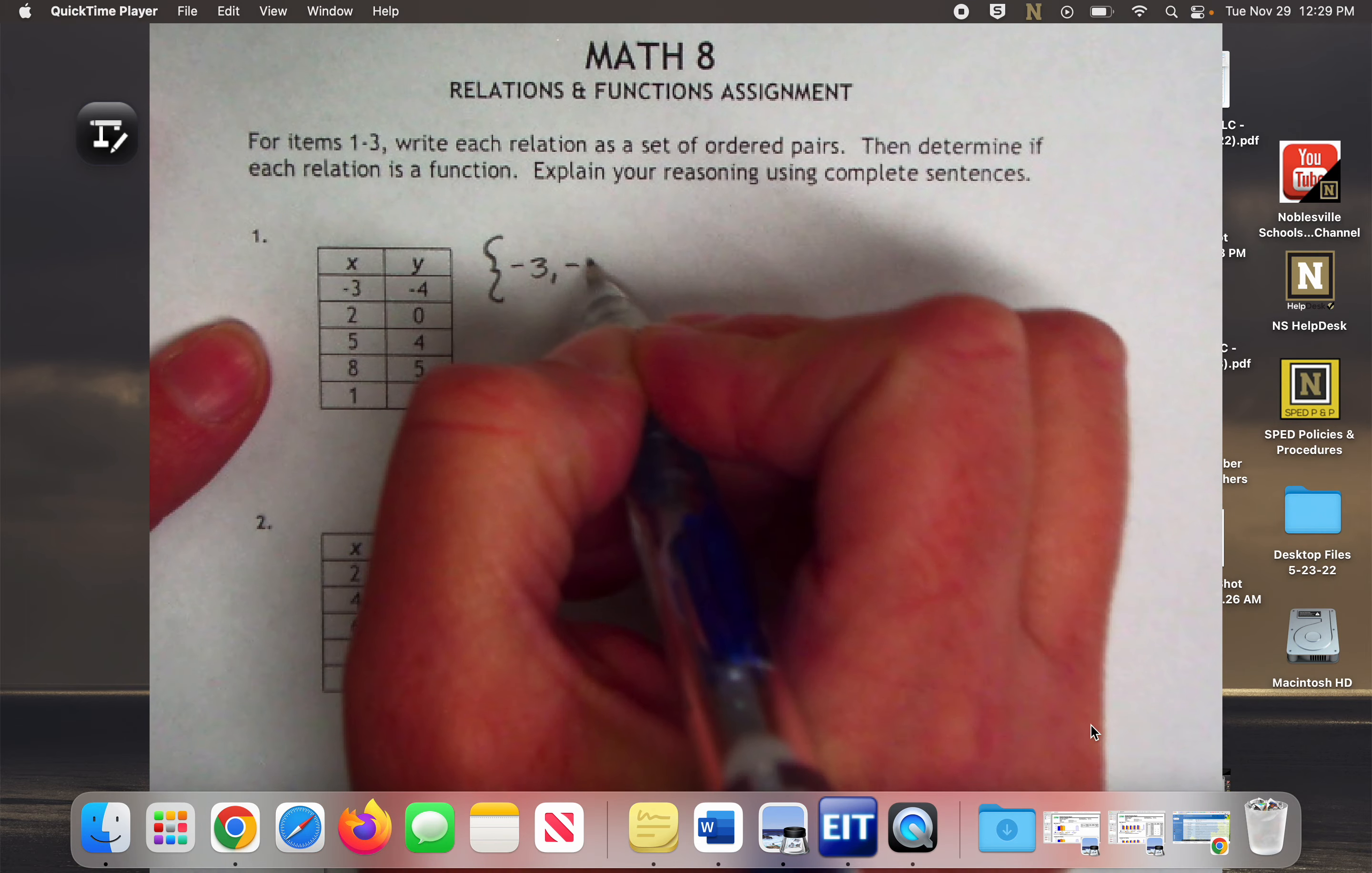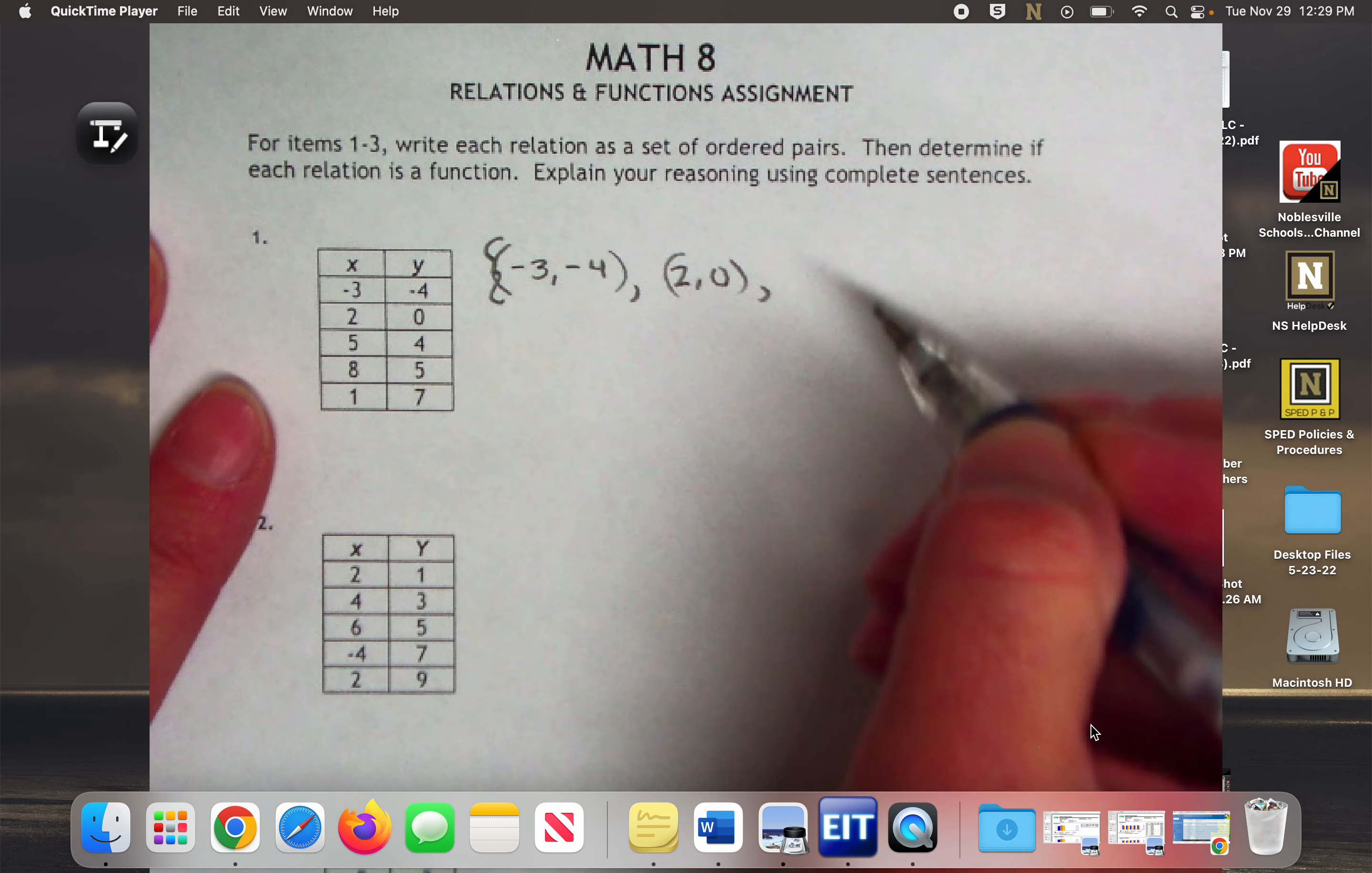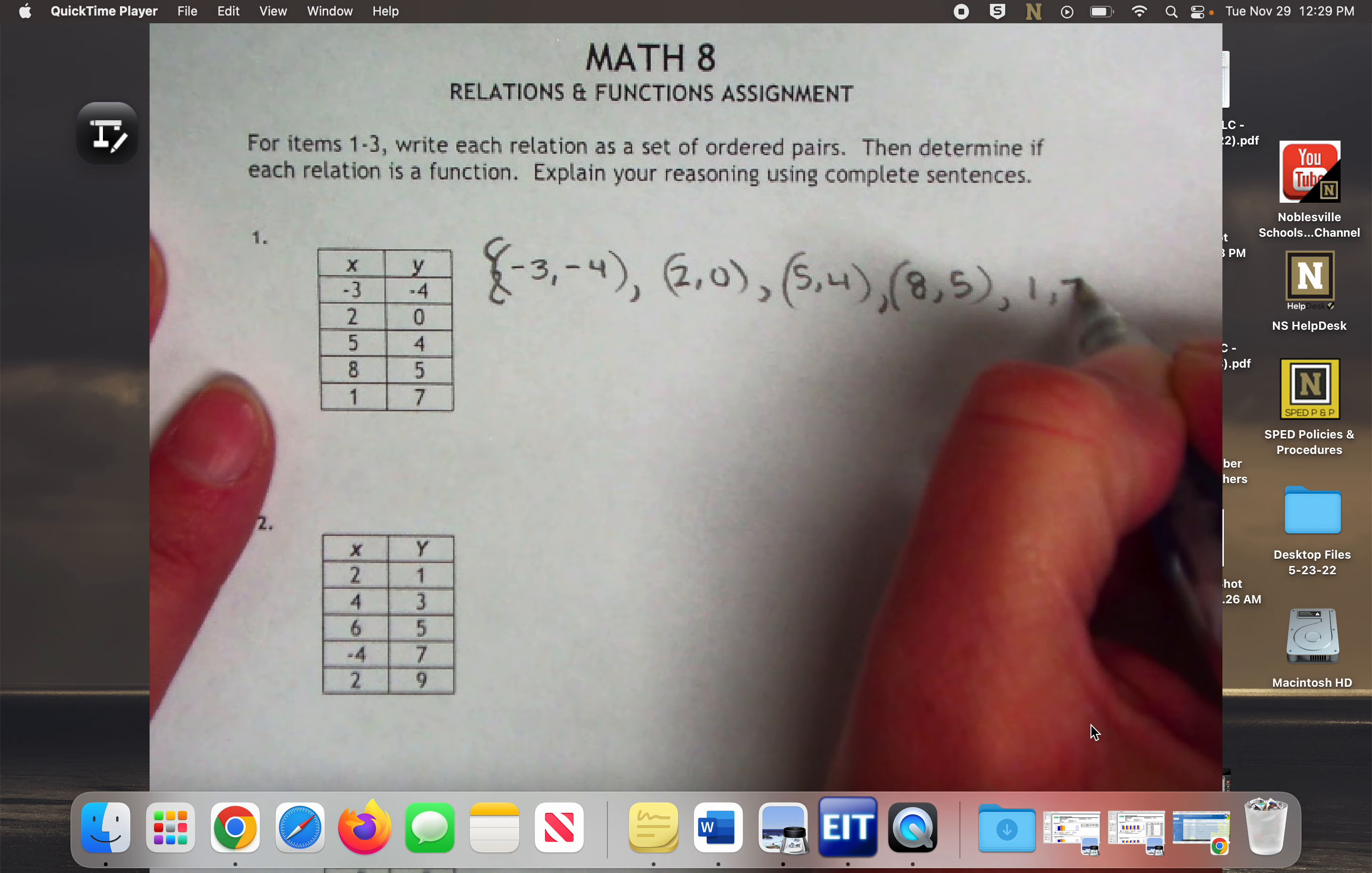Negative three, negative four. What will the next ordered pair be? Two and zero. Two, zero. Xavier, what's the next one? Five, four. Five, four. Eight, five. And then one, seven.